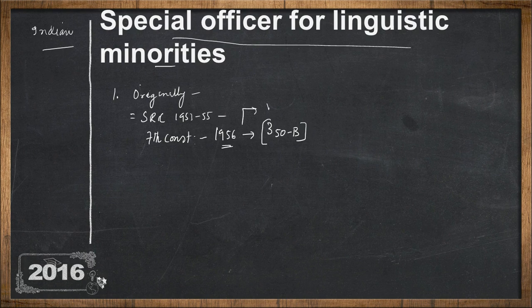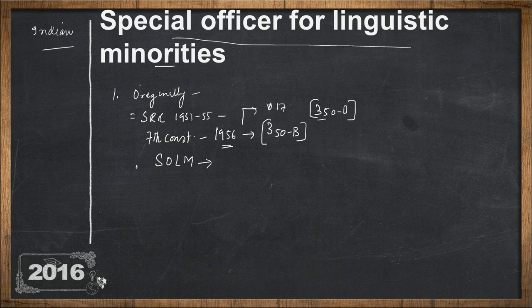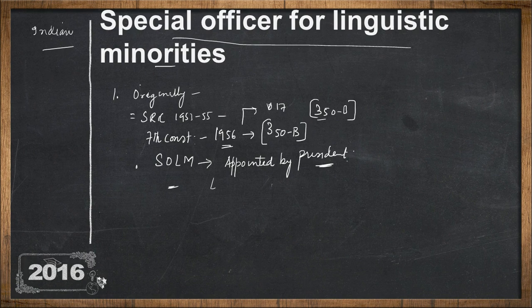Article 350B is found in Part 17 of the constitution. Article 350B states that there will be a Special Officer of Linguistic Minorities, who will be appointed by the President of India. The duty of the Special Officer is to investigate the many safeguards provided for linguistic minorities in the constitution.